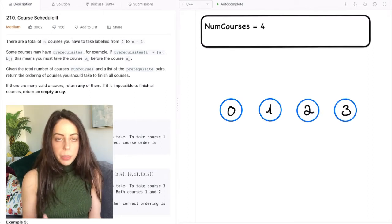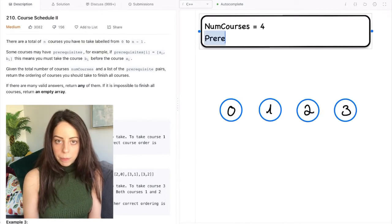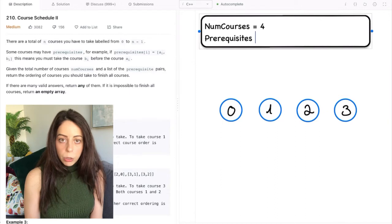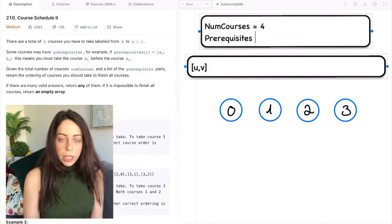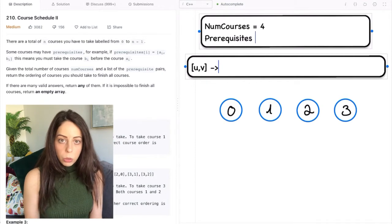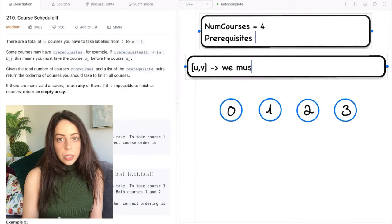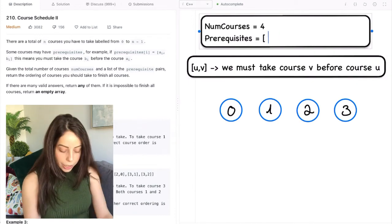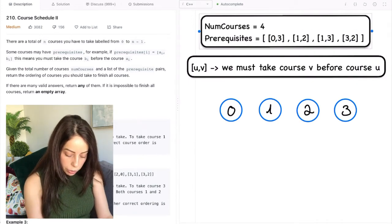The second input for this problem is an array of pairs called prerequisites. Each pair represents a dependency relationship between two courses. So if the prerequisites array contains a pair uv, that means that the course labeled u depends on the course labeled v. It means that we have to take course v before we take course u. In the example we have four dependency relationships.